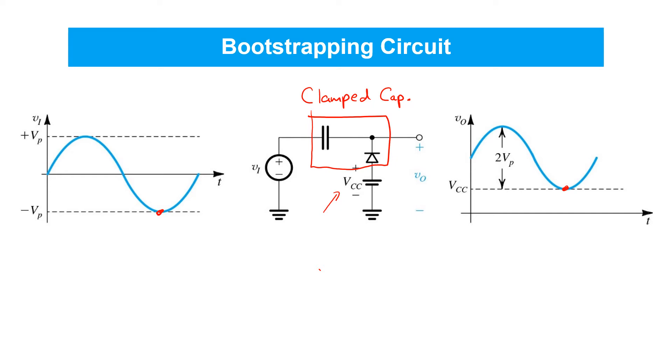You can think about what happens when vi equals the most negative going peak. In this case it's a sinusoid with a peak amplitude of vp. Then recognize that the diode will turn on. Using an ideal diode model we may therefore replace it with a short circuit and you end up with a voltage across this capacitor equal to vcc plus the negative going amplitude at vi. Therefore at the output you see vi plus that capacitor voltage vcc plus vp.